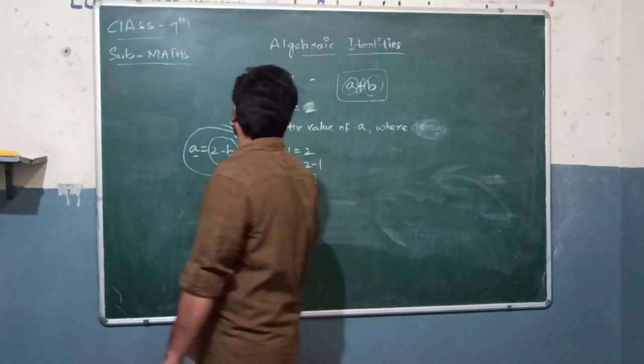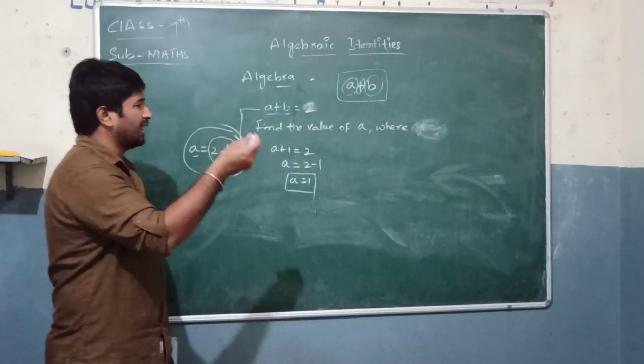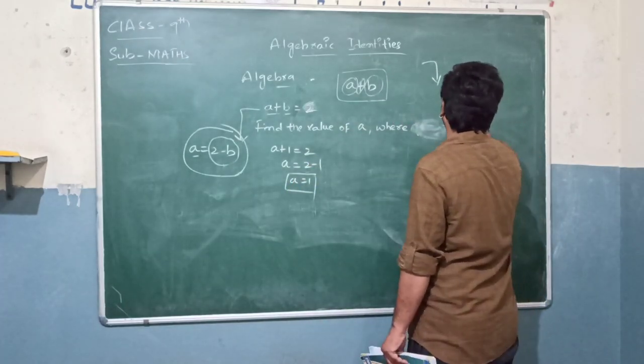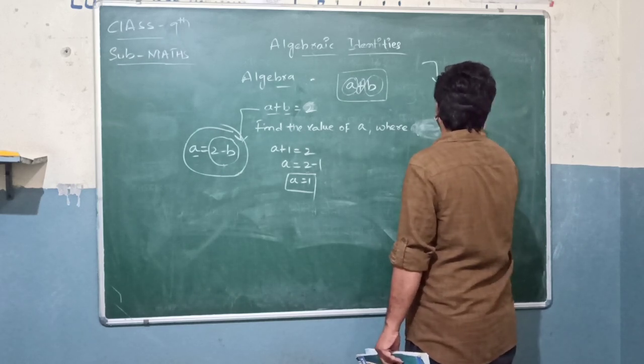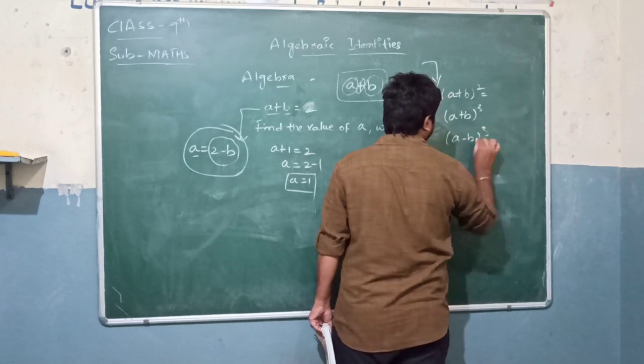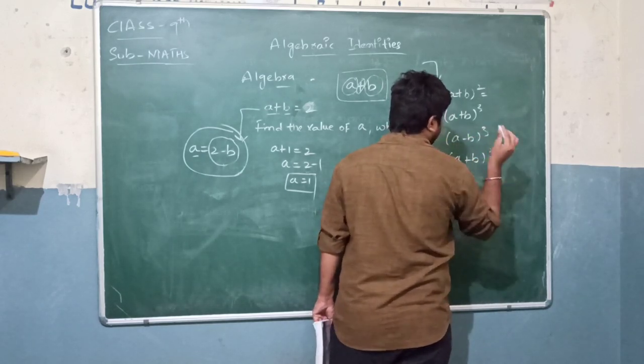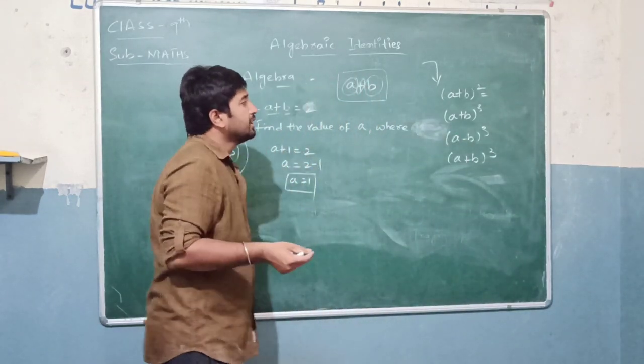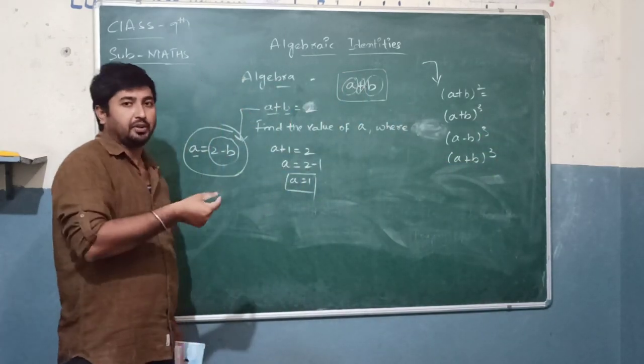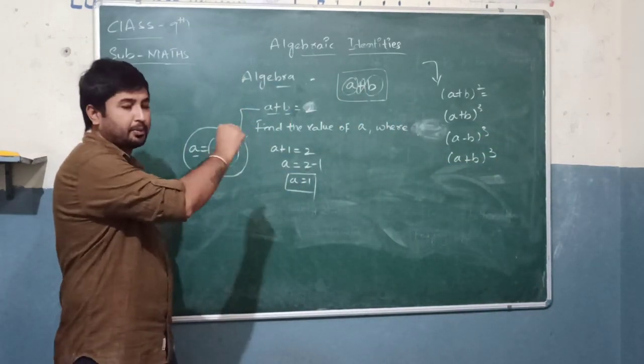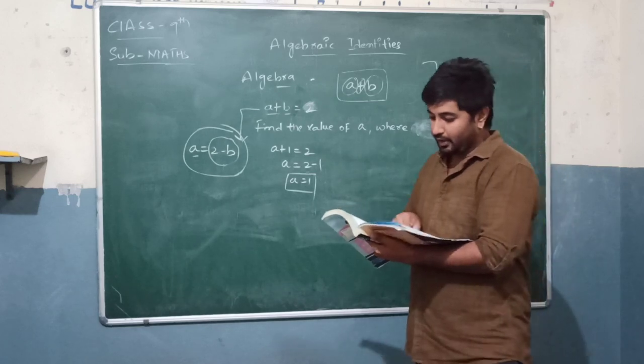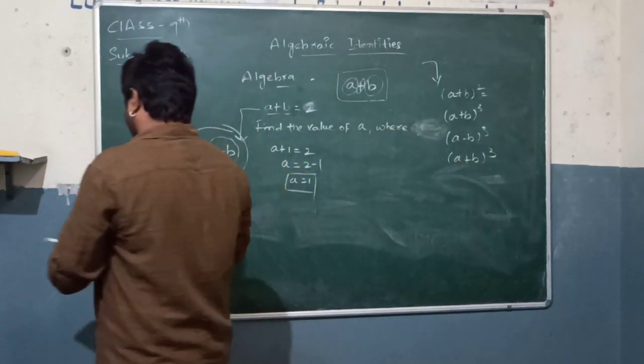This is a small explanation of algebra. In the last class you learned the formula for a plus b whole square, a plus b whole cube, a minus b whole cube. Next is the algebraic identities.